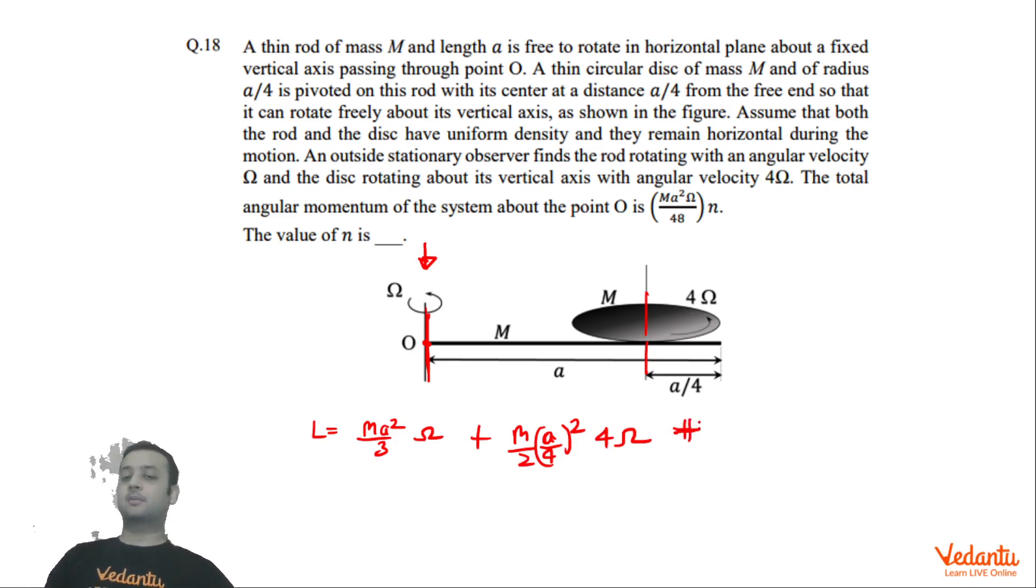Plus angular momentum of center of mass about point O, that is mvr. So mass of the disc is M, velocity of center of mass will be 3a/4 × ω because center of mass will be going in a circular motion of 3a/4 about point O with an angular velocity of ω. So M × 3a/4 × ω × r, where r again is 3a/4.